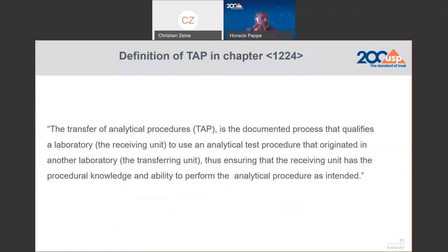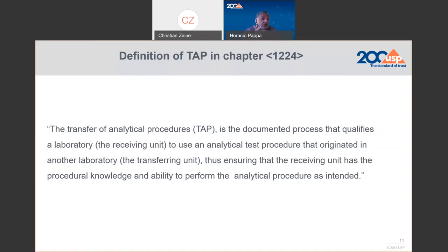Transfer is defined in chapter 1224. The transfer of analytical procedures is a documented process that qualifies a laboratory—the receiving unit—to use an analytical test procedure that originated in another laboratory, the transferring unit, thus ensuring that the receiving unit has the procedural knowledge and ability to perform the analytical procedure as intended. Here the focus is not the method, not the sample—it's the lab. During the transfer, your intention is to demonstrate that the receiving unit has the appropriate personnel to run the test, and that laboratory services and instruments are appropriate.